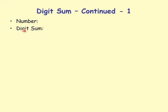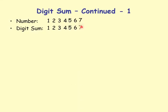Let's compute digit sums of natural numbers starting from 1. For single-digit numbers 1 through 9, the digit sum equals the number itself: digit sum of 1 is 1, of 2 is 2, all the way to digit sum of 9 is 9.